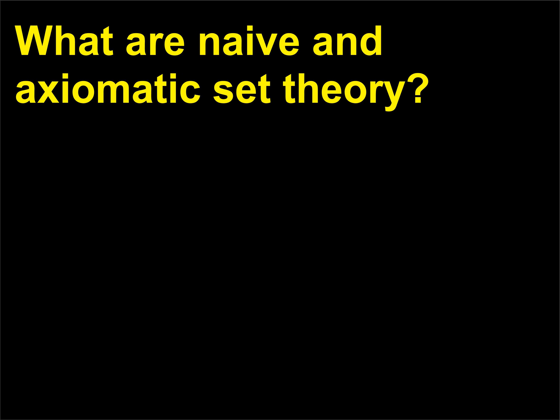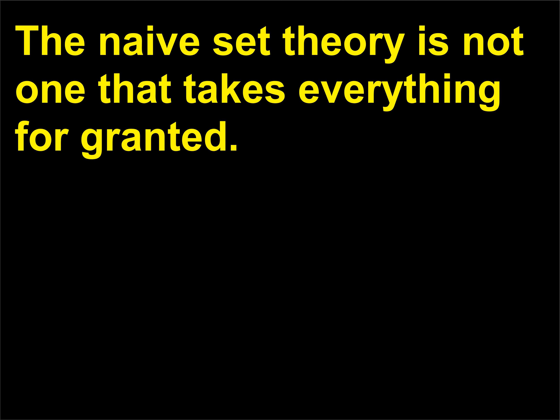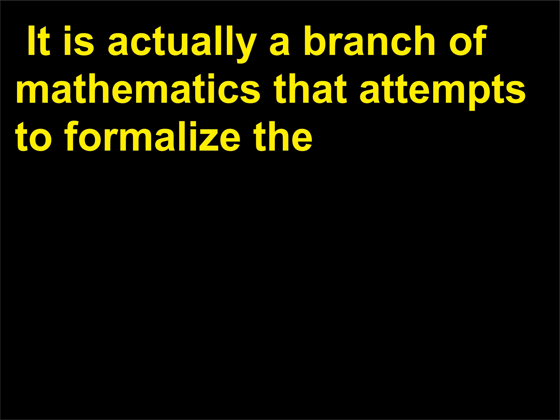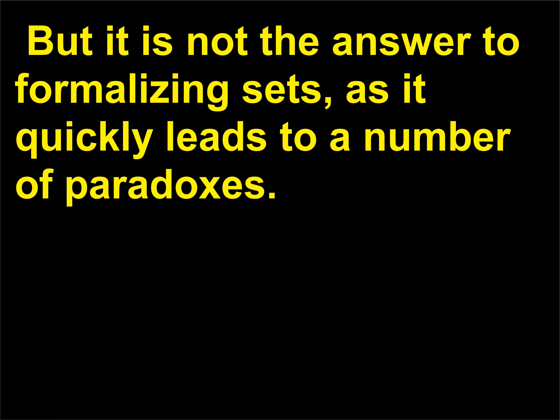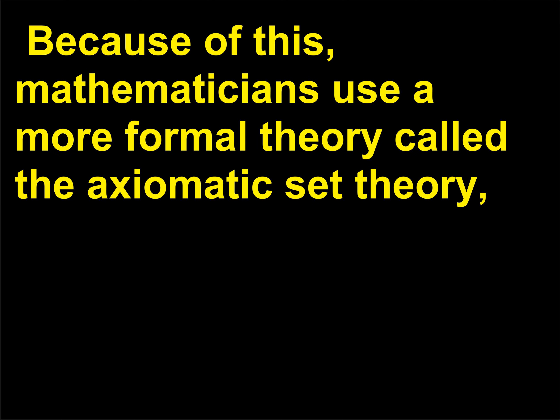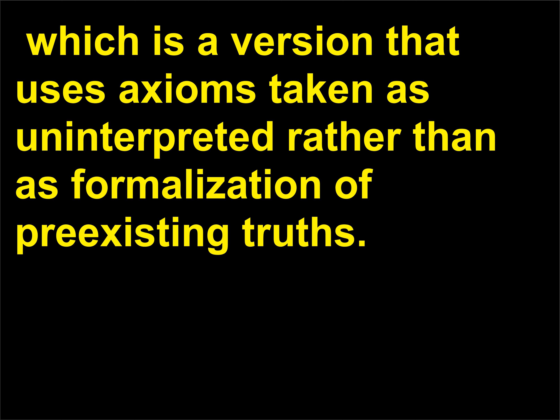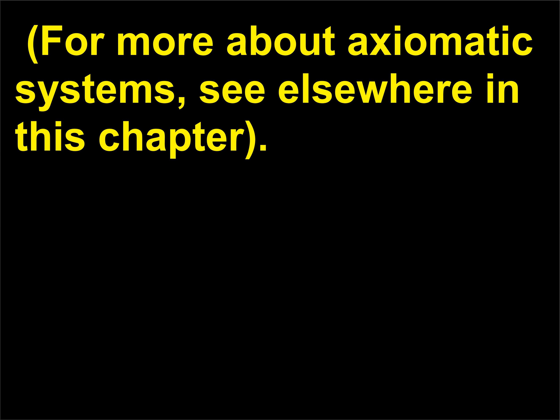What are naive and axiomatic set theory? Naive set theory is a branch of mathematics that attempts to formalize the nature of the set using the fewest number of independent axioms possible. But it quickly leads to a number of paradoxes. Because of this, mathematicians use a more formal theory called axiomatic set theory, which uses axioms taken as uninterpreted rather than as formalization of pre-existing truths. For more about axiomatic systems, see elsewhere in this chapter.